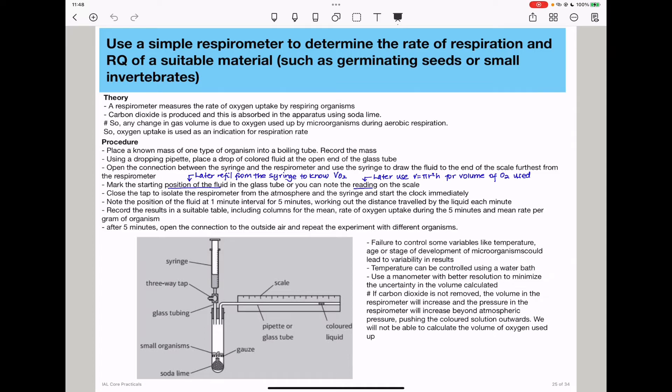Then you'll note the position of the fluid at one minute intervals for five minutes, working out the distance traveled by the liquid each time, and then record the results in a suitable table, including columns for mean, the rate of oxygen uptake during five minutes, and the mean rate per gram of organism.